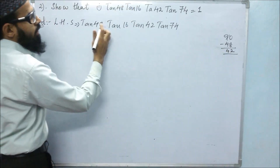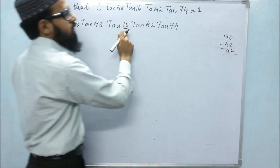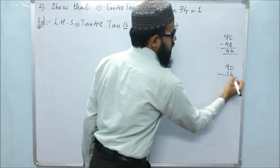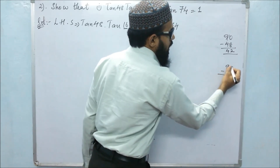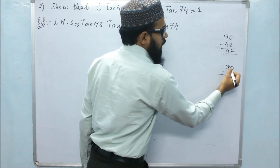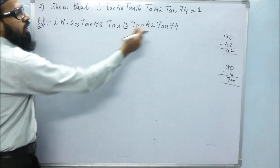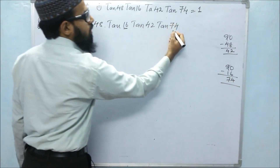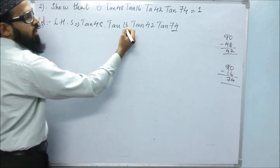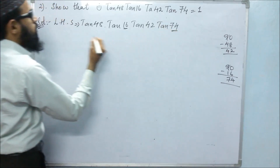Next, if we subtract 16 from 90, what will it be? So 90 minus 16: 10 minus 6 is 4, and 8 minus 1 is 7, so 74. That means subtracting 16 from 90 gives us 74.